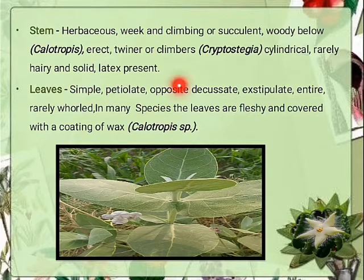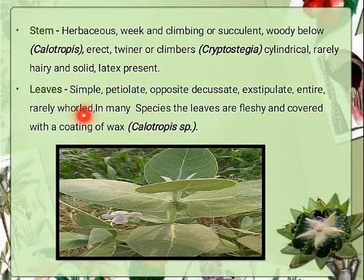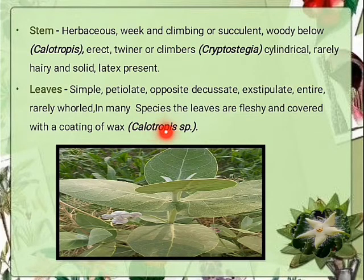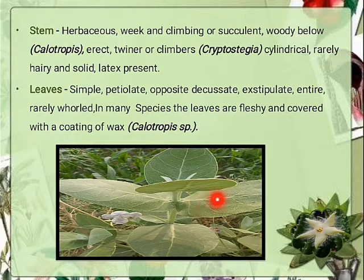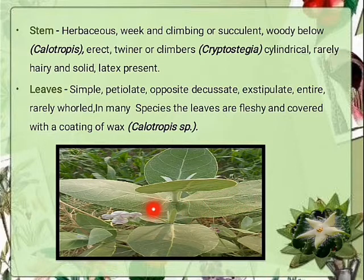Leaves: simple, petiolate, opposite decussate, exstipulate (stipule absent), entire (smooth margin present), rarely whorled. A group of four or more leaves occurring as a whorl or group at each node is known as whorled phyllotaxy. In many species, leaves are fleshy and covered with waxy coatings, for example in Calotropis species. In opposite decussate phyllotaxy, each pair of leaves is arranged at right angles to the next pair and the pair below.